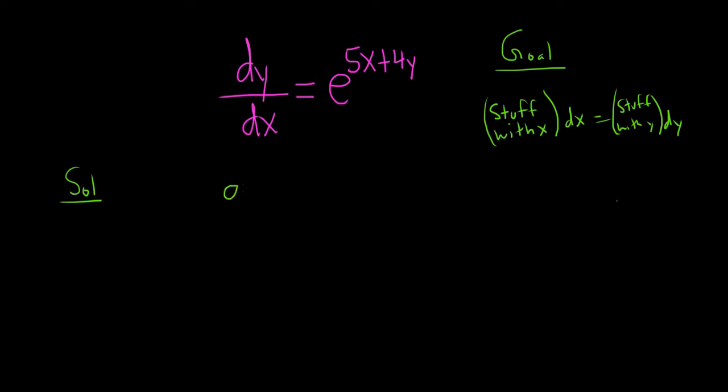So a good first step maybe is to rewrite our exponential function. We have dy/dx equals - we can write this as e^(5x) times e^(4y) using properties of exponents, because when you multiply the e's you add the exponents.